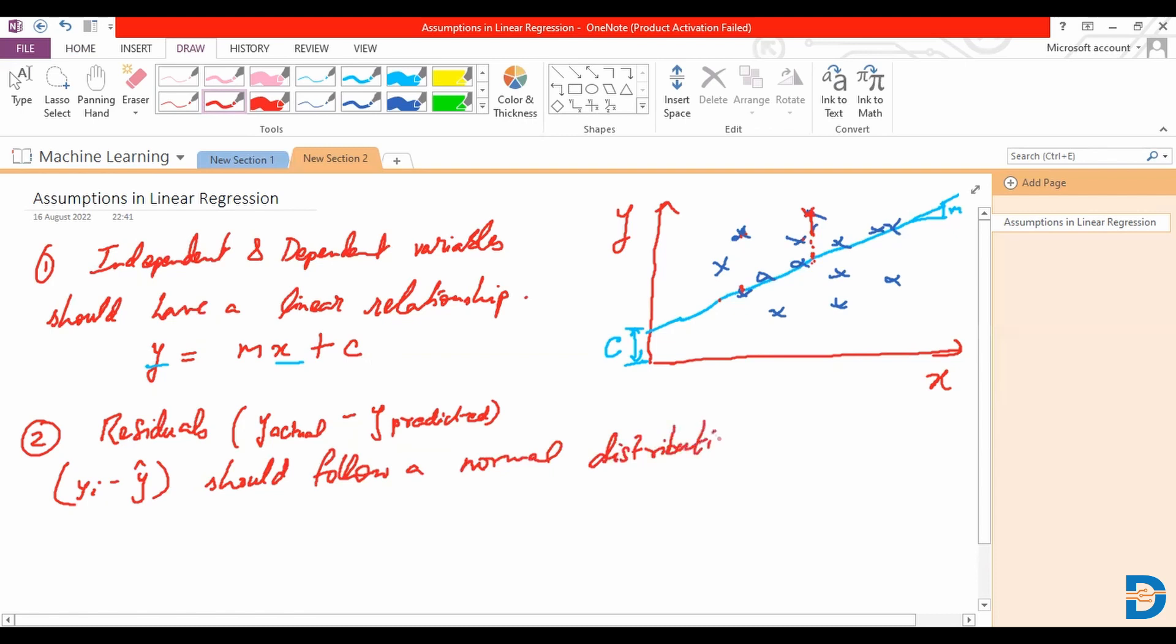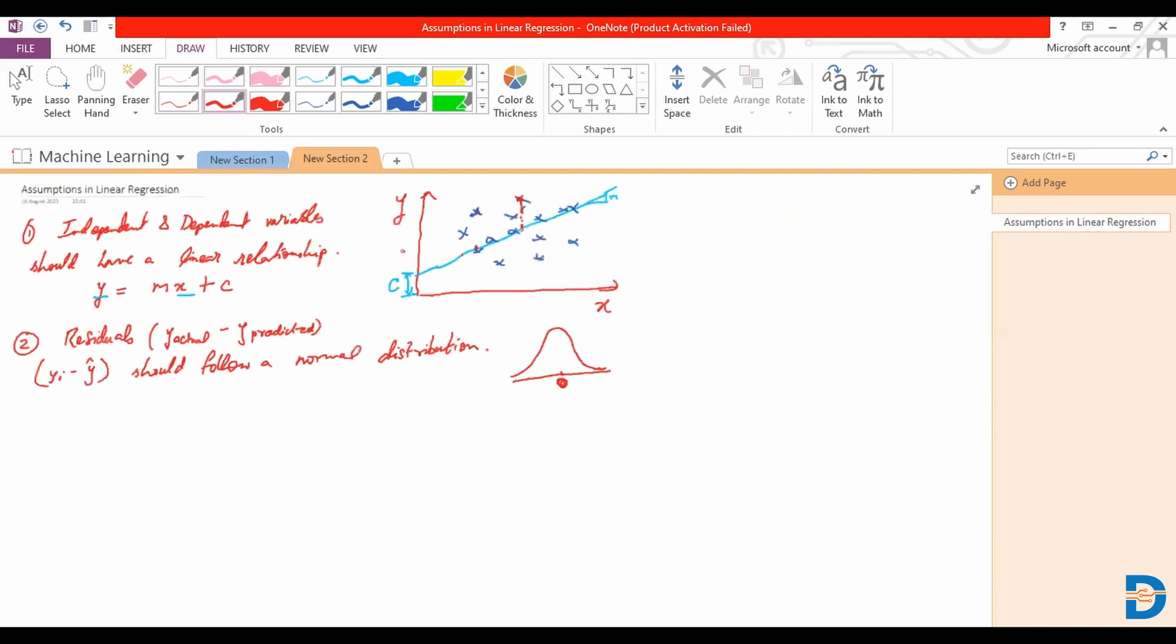Which is to say when we draw a scatter plot like this one we cannot be having too many outliers. Most of them are converging towards the best fit line that has been drawn y is equal to mx plus c. Okay our residuals are more or less converging towards the mean value which is to say the mean value of that residual is basically close to zero. So that's our second assumption.